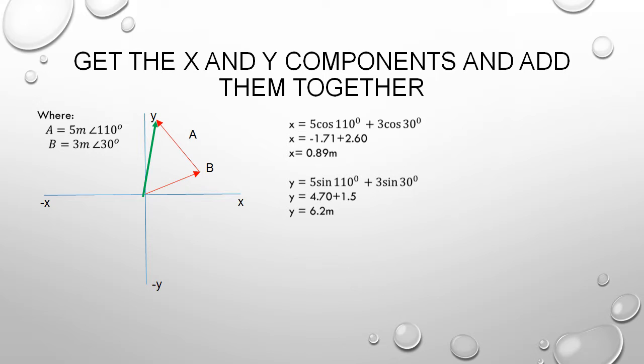For the x component of the resultant vector, we would have 5 cos 110 degrees plus 3 cos 30 degrees, which coincides with the x components of vectors A and B. Our resultant x component is 0.89 meters.